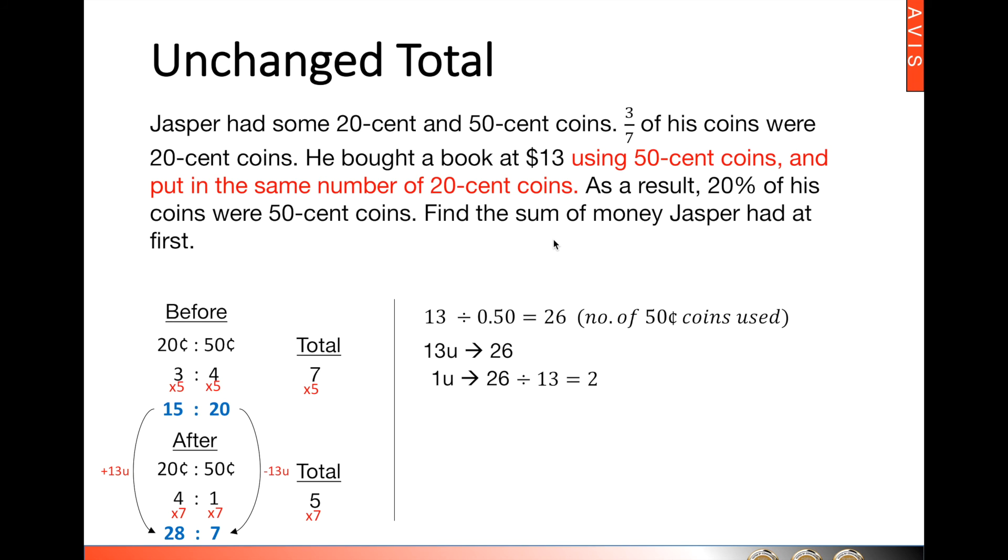One of the most common mistakes students make is they add the two units, 35 units, and they take 35 times 2, and they get 70. That 70 is the total number of coins. It is not the total value of coins. So we have to be very careful here. In this case, we have no choice but to find the value individually.